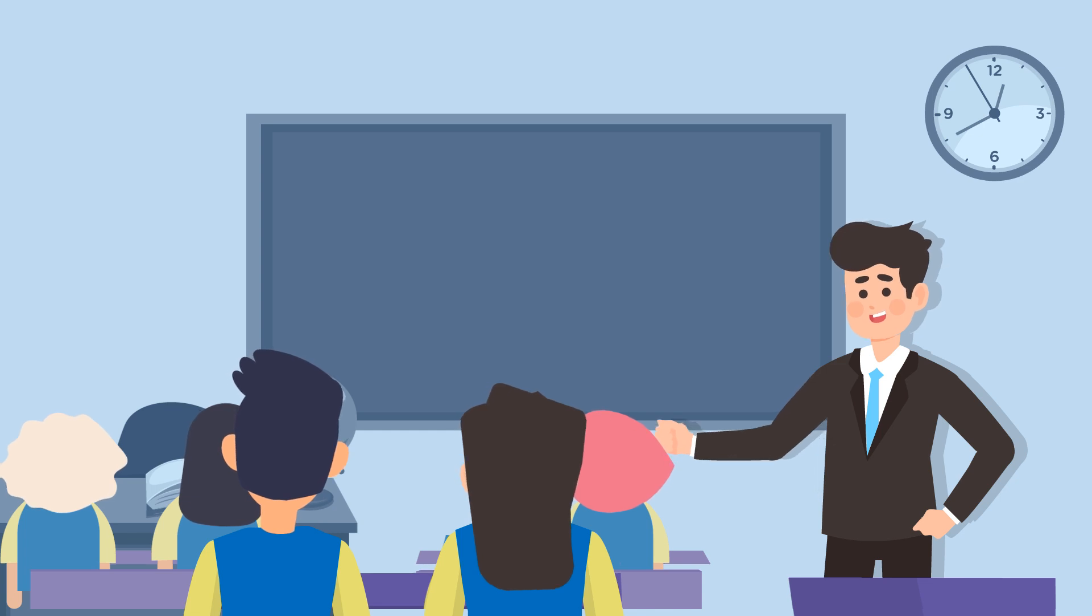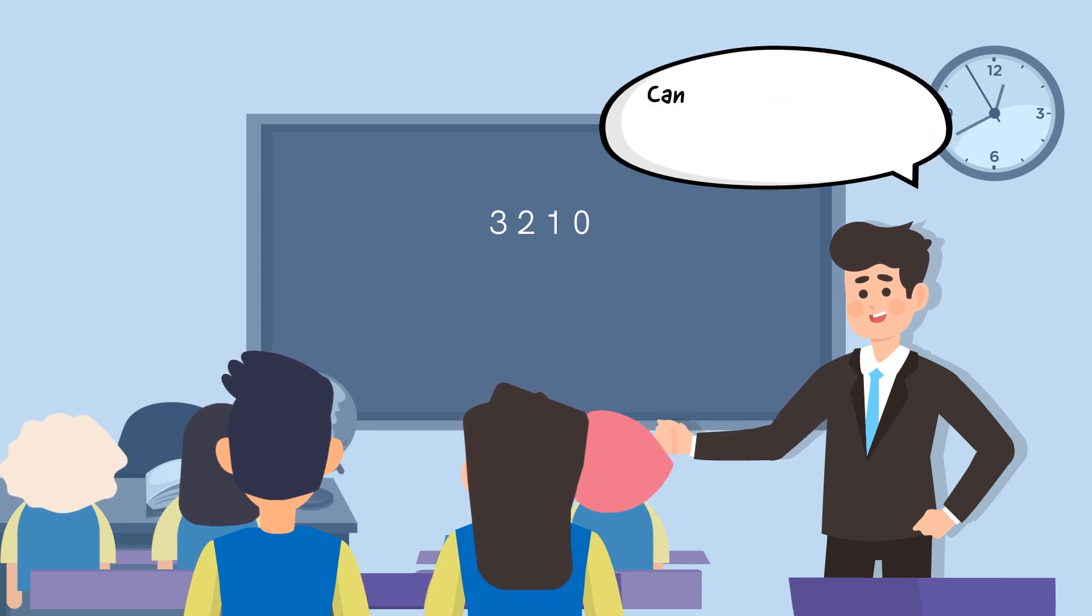Conduct a discussion in the class through the given process. Write a four-digit number on the blackboard: 3210. Then ask the students, 'Can you tell me in words what is the number written on the blackboard?'